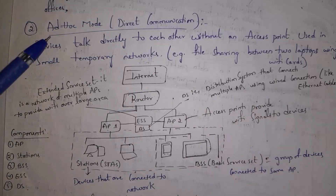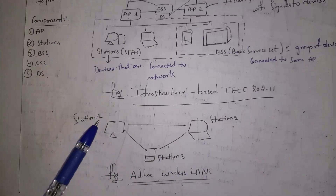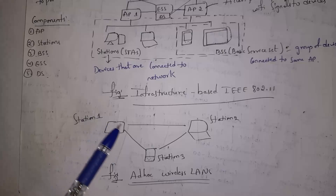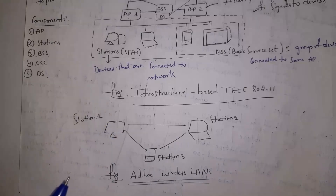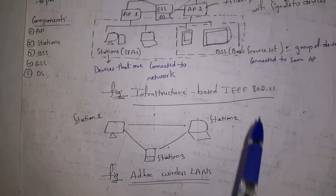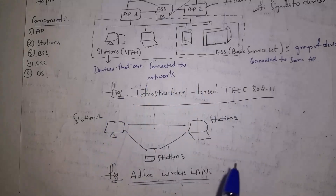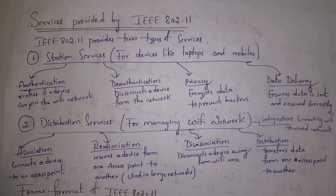The next architecture is ad hoc mode. In this architecture, devices communicate directly with each other without any access point. For example, station 1, 2, and 3 — which are devices connected to the network — all communicate directly without any access point.